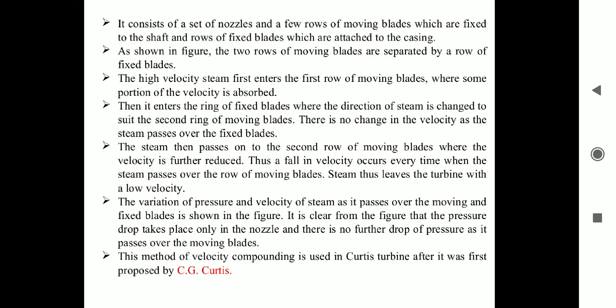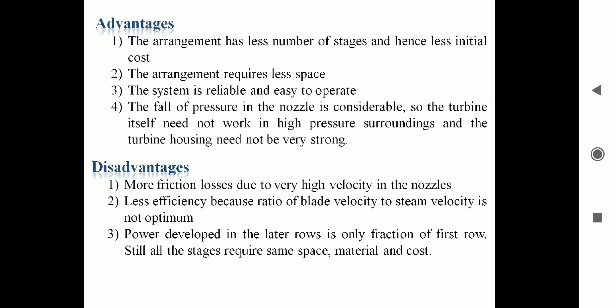You need to remember that velocity compounding uses the Curtis turbine. The advantages are as follows. First, it has fewer number of stages and less initial cost compared to other turbines. Second, it requires quite less space. Third, the system is viable and easy to operate. Fourth, the pressure drop in the nozzle is considerable, so the turbine itself may work under high pressure conditions and the turbine has to be very strong.